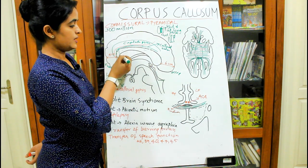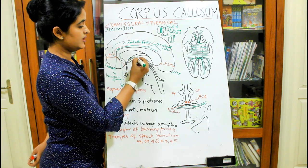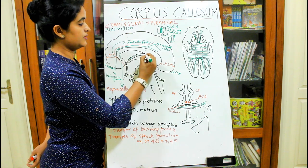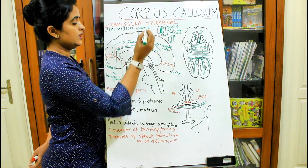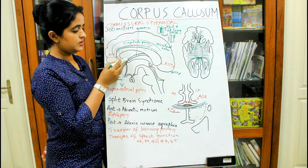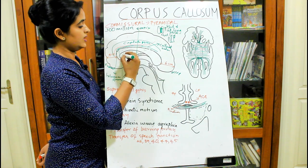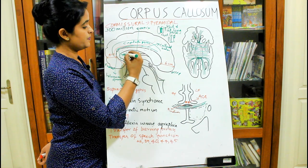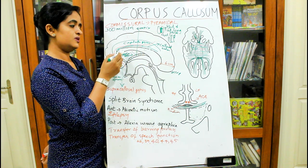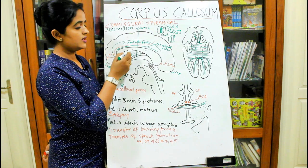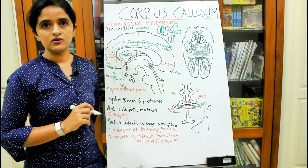If you look at the lower concave aspect of the corpus callosum, you can see a band of white matter — the fornix. The corpus callosum is connected to the fornix by a thin strip known as the septum pellucidum. The septum pellucidum is a thin lamina connecting the inferior aspect of the corpus callosum with the fornix.